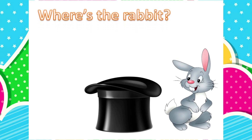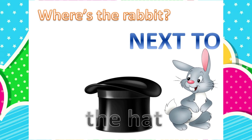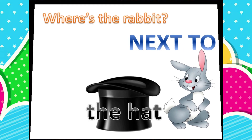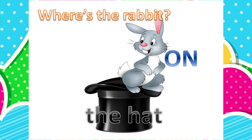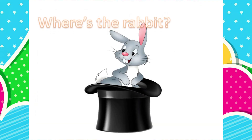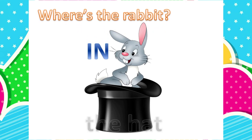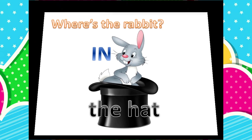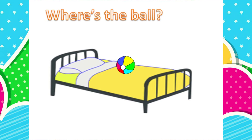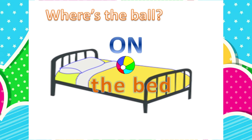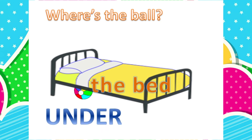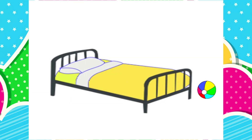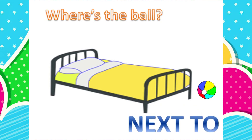Where's the rabbit? Next to the hat. Where's the rabbit? The rabbit is on the hat. Where's the rabbit? The rabbit is in the hat. Where's the ball? On the bed. Where's the ball? Under the bed. Where's the ball? Next to the bed.